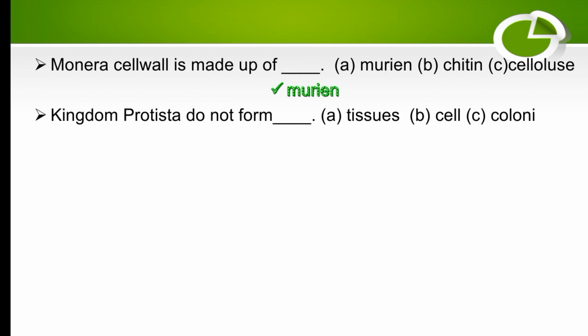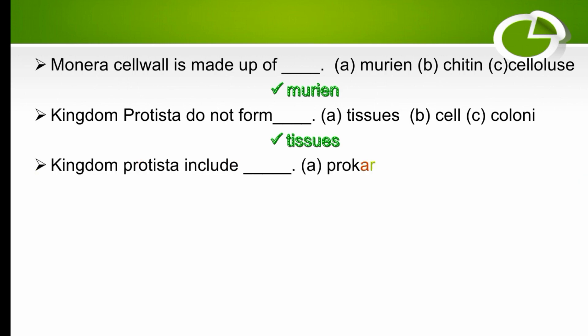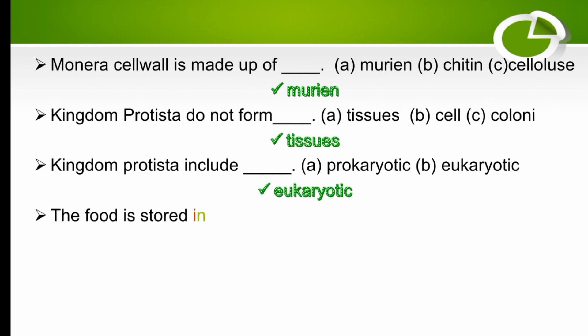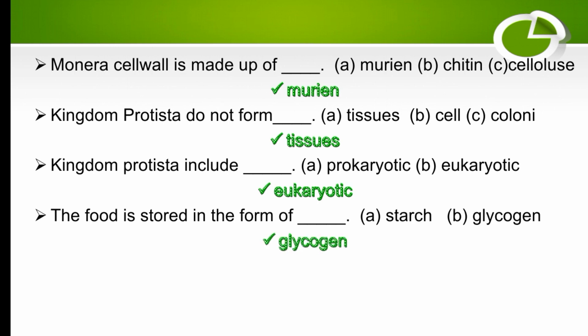Kingdom Protista does not form tissues — the right option is tissue. Kingdom Protista includes eukaryotes — the right option is eukaryotes. Protista store food in the form of glycogen — the right option is glycogen.